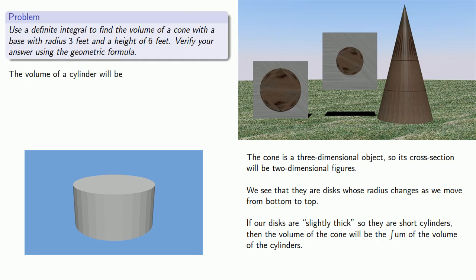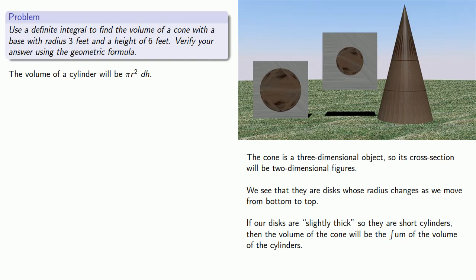So the volume of a cylinder will be π times the radius squared times the height, where, for now at least, we'll leave our radius as r, and our height a tiny portion of the height, dh. So the volume of these cylinders will be πr² dh, and we'll sum these from the lowest height, h equals zero, to the highest height, h equals six.